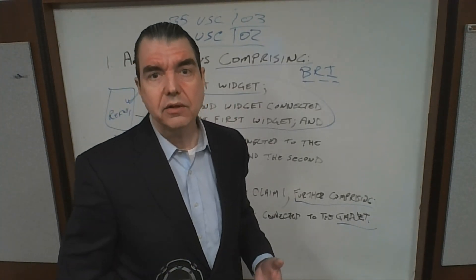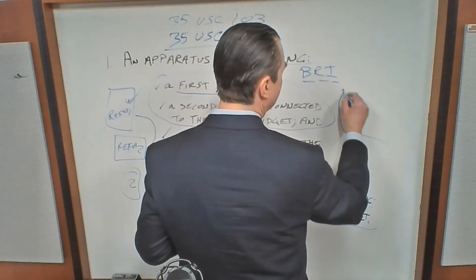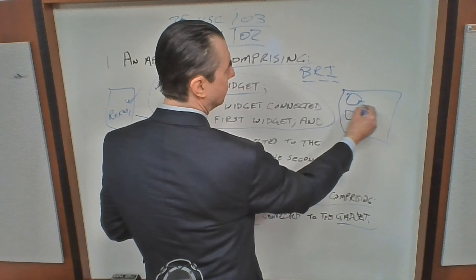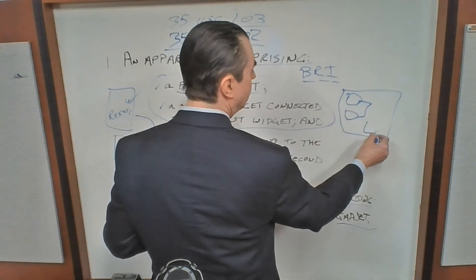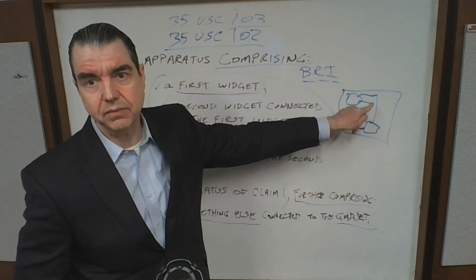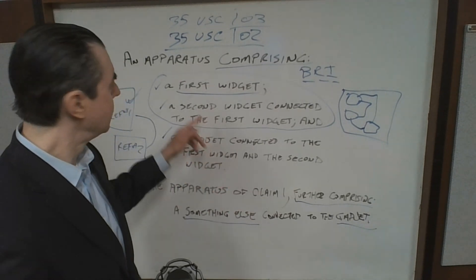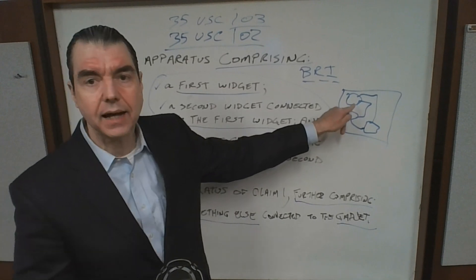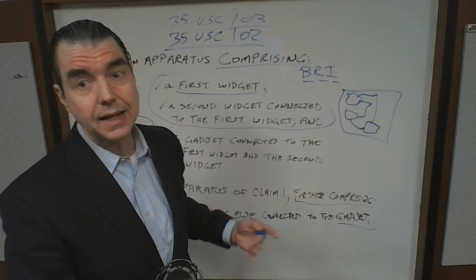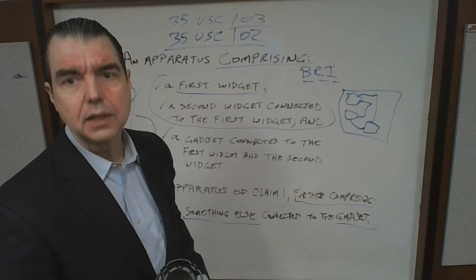For example, the first widget — what is it? In your specification it should be defined. You'll have diagrams showing the first widget and the second widget, showing they're connected, and showing the gadget connected to both widgets. That diagram in your patent application is legal support, in conjunction with the written description, for your claim subject matter. You need text in the specification that describes the diagram to support the claim and enable a person of ordinary skill in the art to make and use your invention.